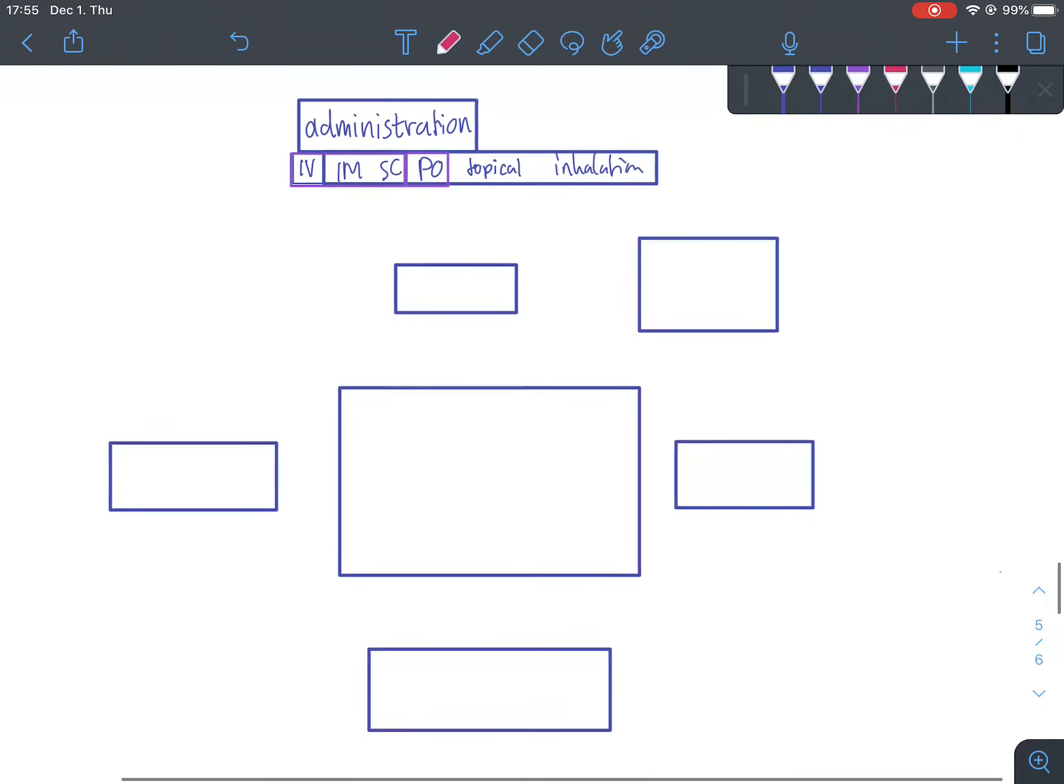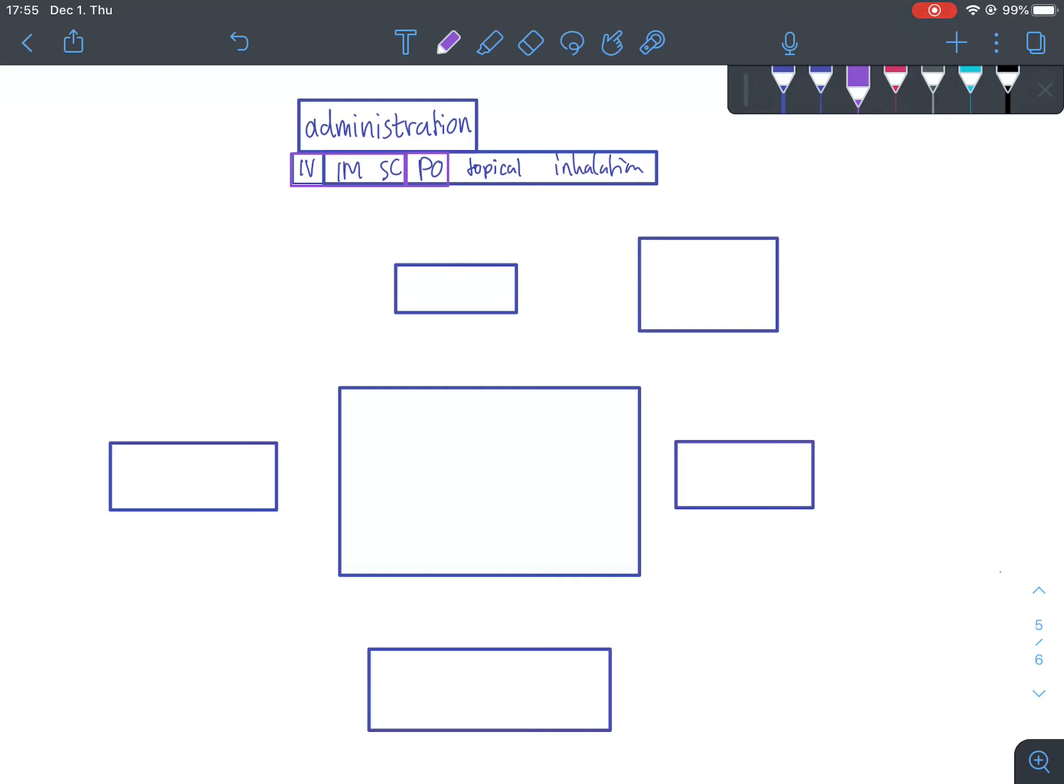Alright, so let's look at our overview for what's going to happen. The first decision we need to make when we are prescribing any medication is how are we going to administer this drug. I've written down here the main routes of administration, which are IV, IM (intravenous, intramuscular), subcutaneous, PO, which stands for per os, which is orally, and then there's topical and inhalation.